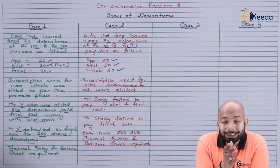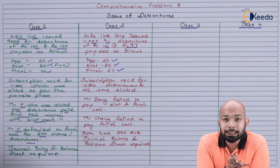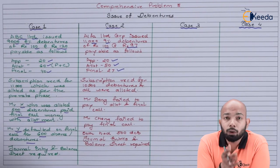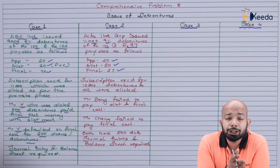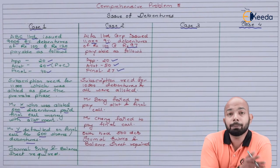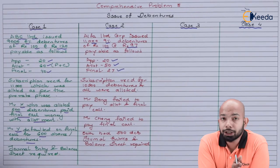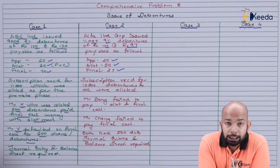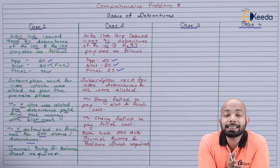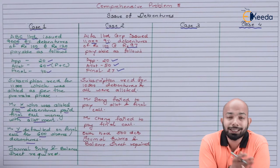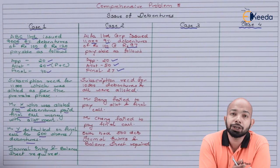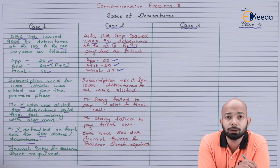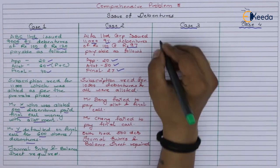Case 3 will consist of information whereby debentures are being issued in terms of assets being purchased — a partial issue and partial asset purchase. Let's start with that part.